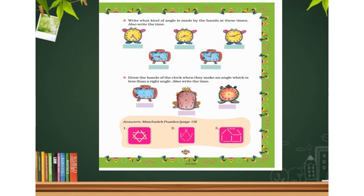Now come to the next one: draw the hands of the clock when they make an angle less than a right angle, and also write the time. Three watches are given. You can see the angle shown is less than 90 degrees. You can create and write the angle yourself, and draw the hands accordingly.